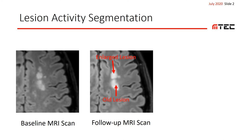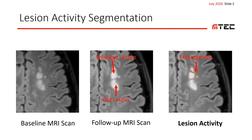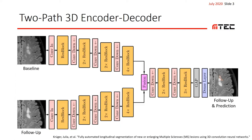If we mark this enlargement of the lesion with color, we obtain what we call lesion activity. The key difference to normal lesion segmentation is that we do not only differentiate between high-intensity lesions and background, but also between old and new lesion material. And of course, we need to process two instead of one volume.